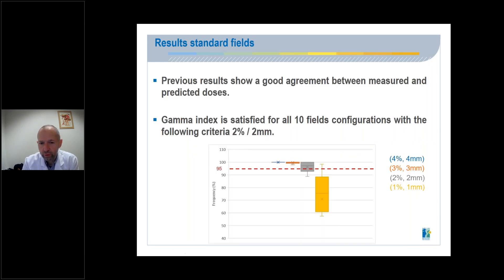From a statistical point of view, we represent the frequency of points respecting the gamma index. Four criteria were analyzed: four percent, four millimeters, three percent, three millimeters, two percent, two millimeters, one percent, one millimeter. Results show for the 10-field configurations, as we did, the optimal criteria, which is two percent, two millimeters, if we consider a 95 percent threshold. The point here, which is out of tolerance, corresponds to a detector positioning in the penumbra of the leaves.